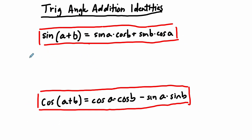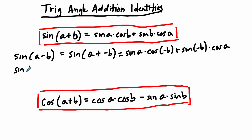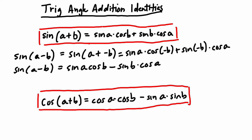Now we can derive all sorts of things. The sine of A minus B is the same thing as the sine of A plus negative B, which equals sine of A times cosine of negative B plus sine of negative B times cosine of A. This simplifies to sine A times cosine B minus sine B times cosine A, because cosine is an even function so cosine of negative B equals cosine of B, and sine is an odd function so sine of negative B equals negative sine of B. You don't need to memorize this — you can just derive it like this.